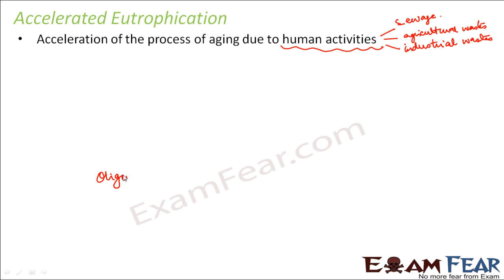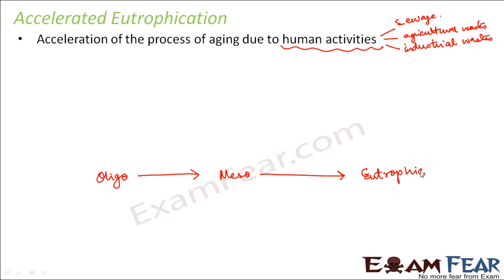Normally, the process of eutrophication changes a lake from an oligotrophic state to a mesotrophic state, and from mesotrophic it gradually changes to a eutrophic state. This gradual conversion takes a very long time — oligotrophic to mesotrophic might take hundreds of years, and mesotrophic to eutrophic might take thousands of years.